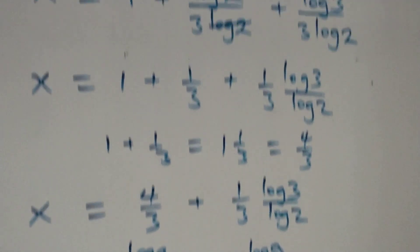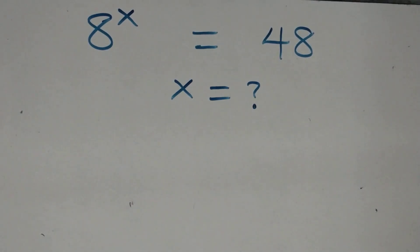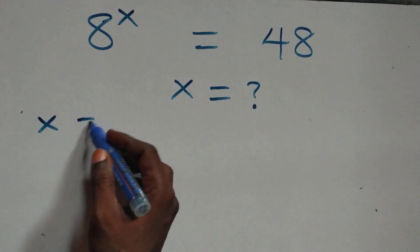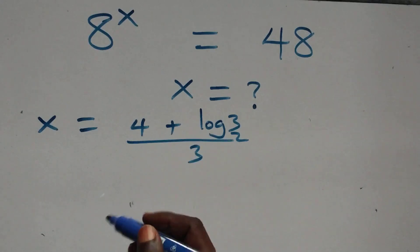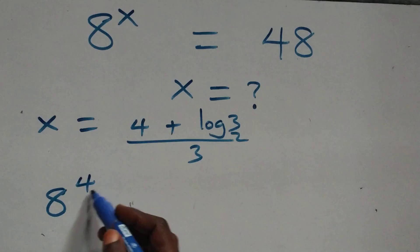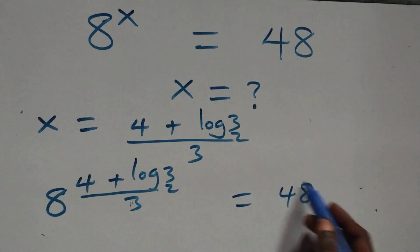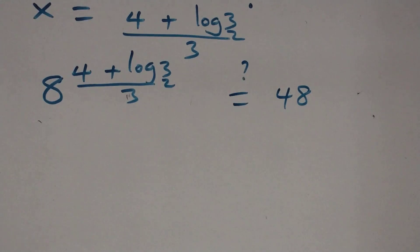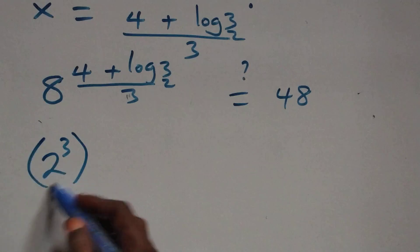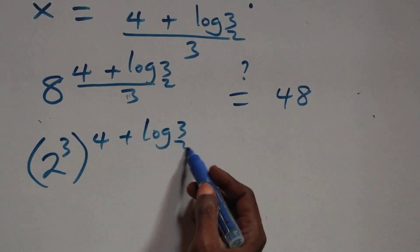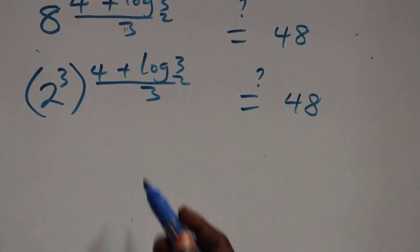Let's check here if this satisfies the given problem. That is, we substitute the value of x, which is x equals to 4 plus log 3 base 2, all over 3. So all we have here becomes 8 raised to power (4 plus log 3 base 2) all over 3, equals to 48. From here we can write 8 as 2 raised to power 3, which is raised to power (4 plus log 3 base 2) all over 3, and this equals to 48. The 3s cancel each other and we have 2 raised to power (4 plus log 3 base 2) equals to 48.